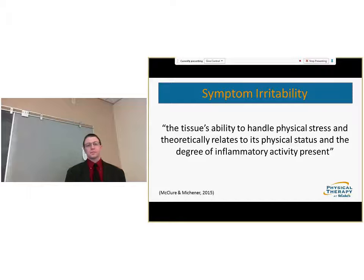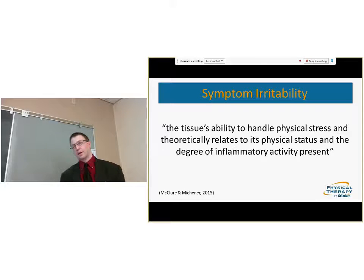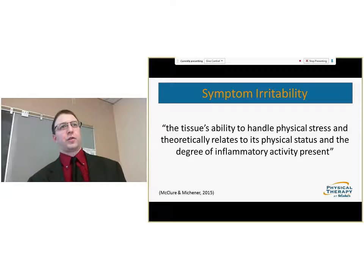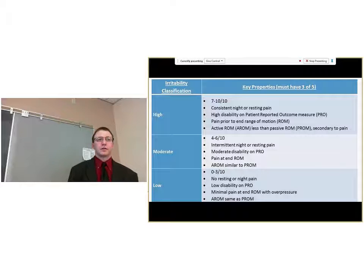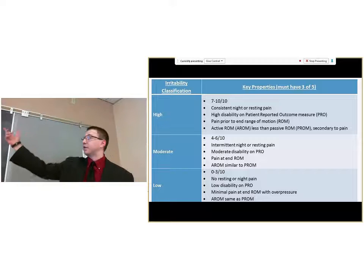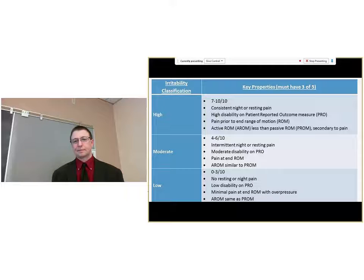Rehabilitation categories are based on stage of tissue irritability to guide intensity of treatment, as well as impairments. The concept of tissue irritability is the tissue's ability to handle physical stress and theoretically relates to the physical status and degree of inflammatory activity present. It is a concept — and this is the framework for the speaker's dissertation. Three phases of irritability, developed by consensus, are operationally defined, and these irritability stages are meant to be mutually exclusive as the primary means of classifying patients.